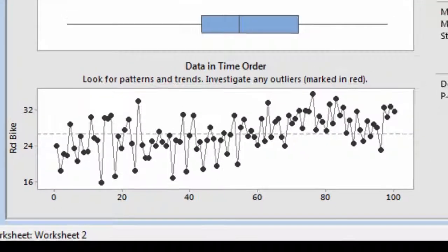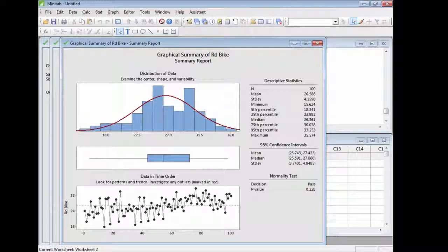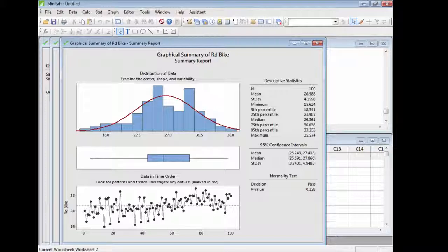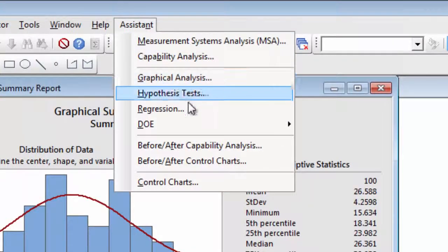His boss may be right. But is the process truly drifting, or is the variation we're seeing just common cause variation that is naturally inherent in the process? The Assistant can create charts to assess the stability of a process. Select Assistant, Control Charts.